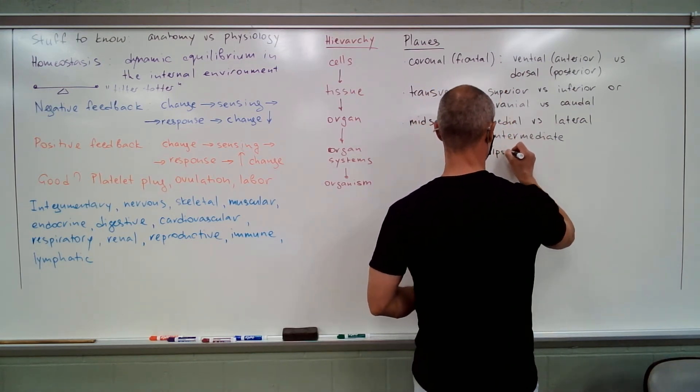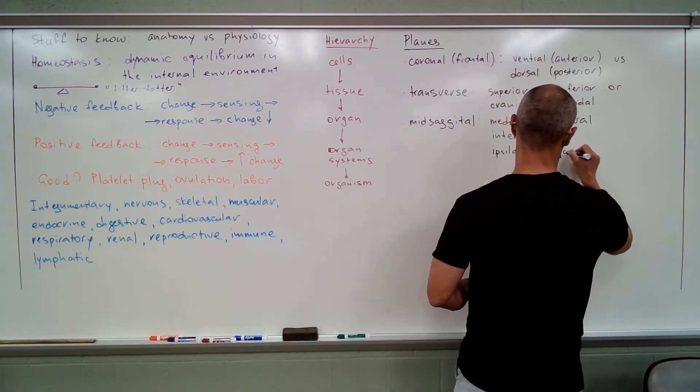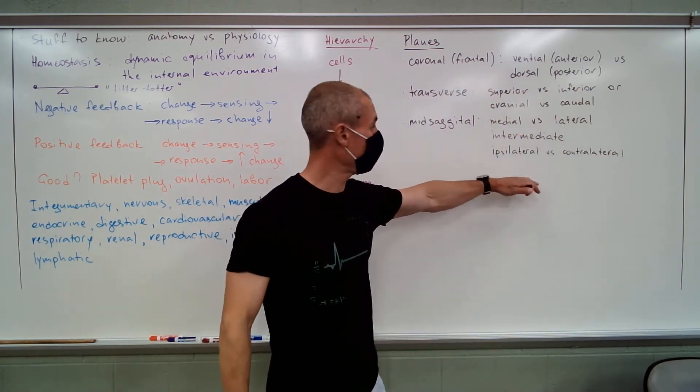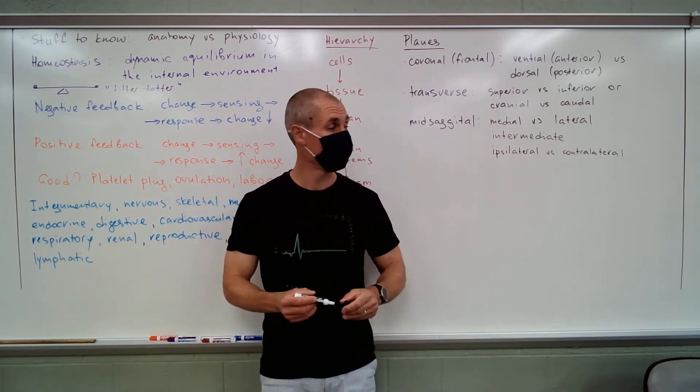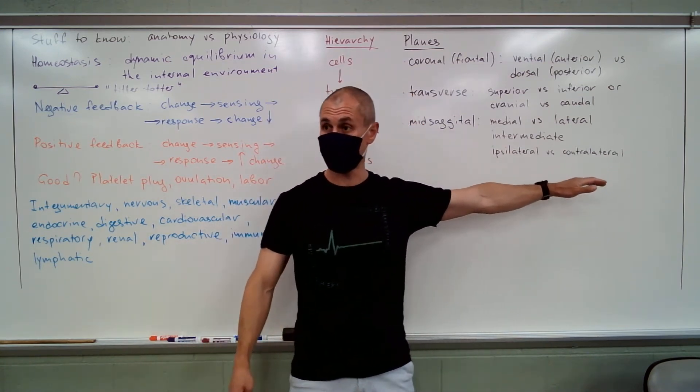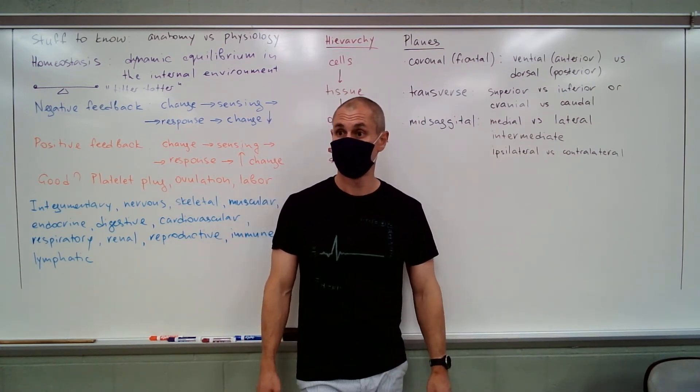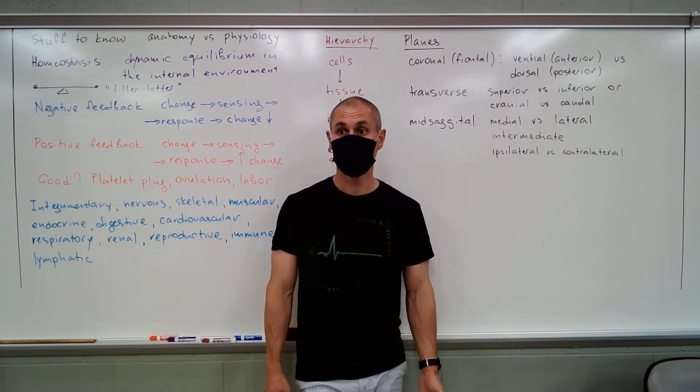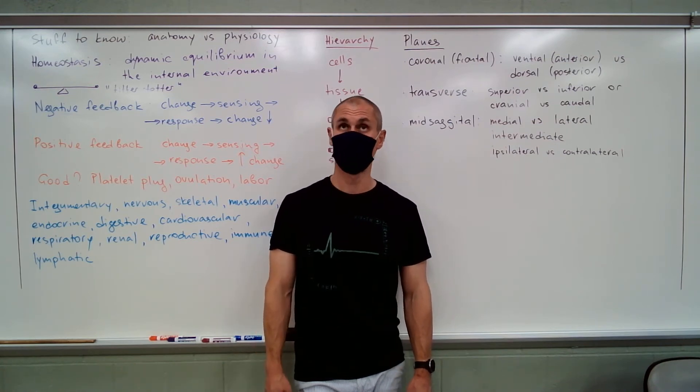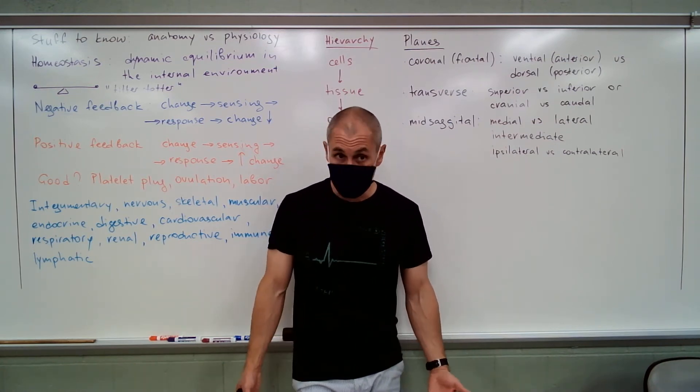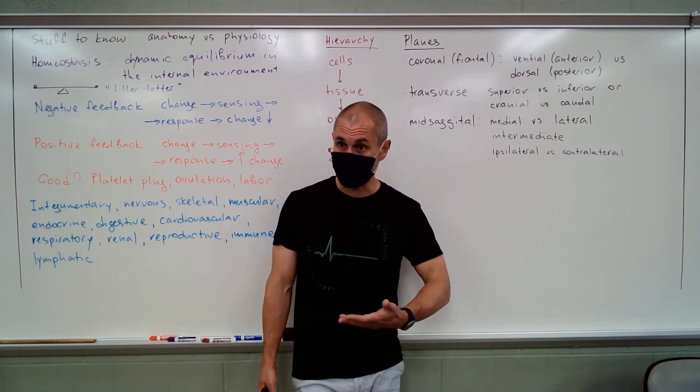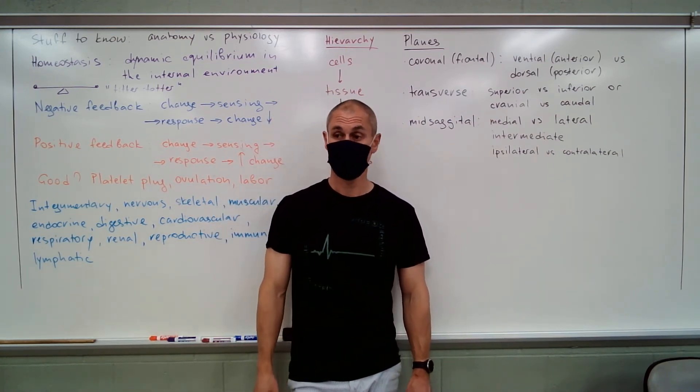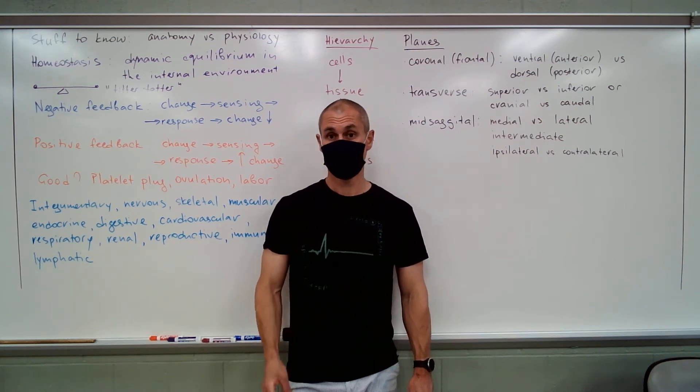Ipsilateral versus contralateral. Same side, opposite sides. Very simple. Ipsilateral versus contralateral. So your arms are contralateral. Your legs are contralateral. Does it make sense? But for example, your kidneys are contralateral. But your gallbladder and your liver are ipsilateral. They are on the same side in relation to that plane.